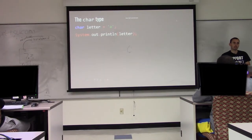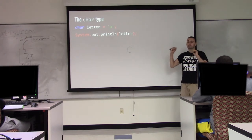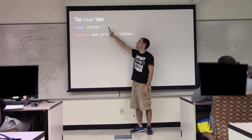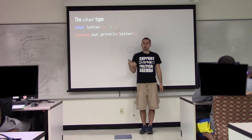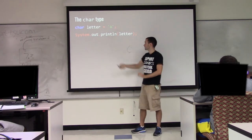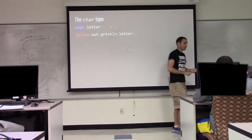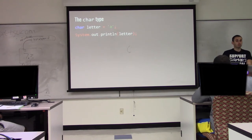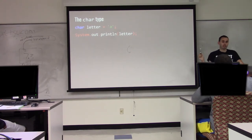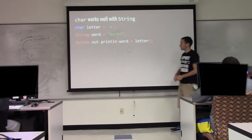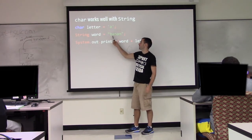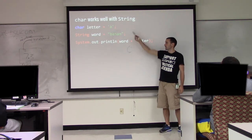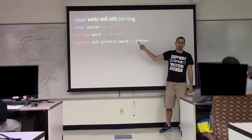The last new type we're looking at today is char — a single character. You use single quotes around it instead of double quotes. If you put double quotes around it, it's a string; if you put single quotes, it's a char. A string is actually internally a sequence of chars. Down here I have a string 'banana' and char 'a', and I can use the plus operation with a string and a char — it adds that char to the end, printing 'banana'.